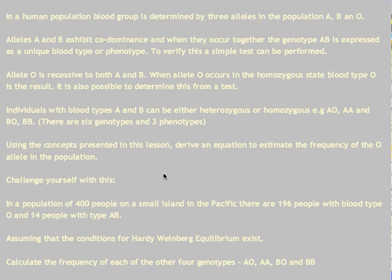Now let's combine our work on the Hardy-Weinberg equation from a previous lesson. In a human population, blood group is determined by three alleles: A, B, and O. Alleles A and B exhibit co-dominance, and when they occur together the genotype AB is expressed as a unique phenotype. Allele O is recessive to both A and B. When allele O occurs in the homozygous state, blood type O is the result. Individuals with blood type A and B can be either heterozygous or homozygous — we can identify type A but can't distinguish AO from AA, and similarly for type B we can't distinguish BO from BB. So there are six genotypes in total.